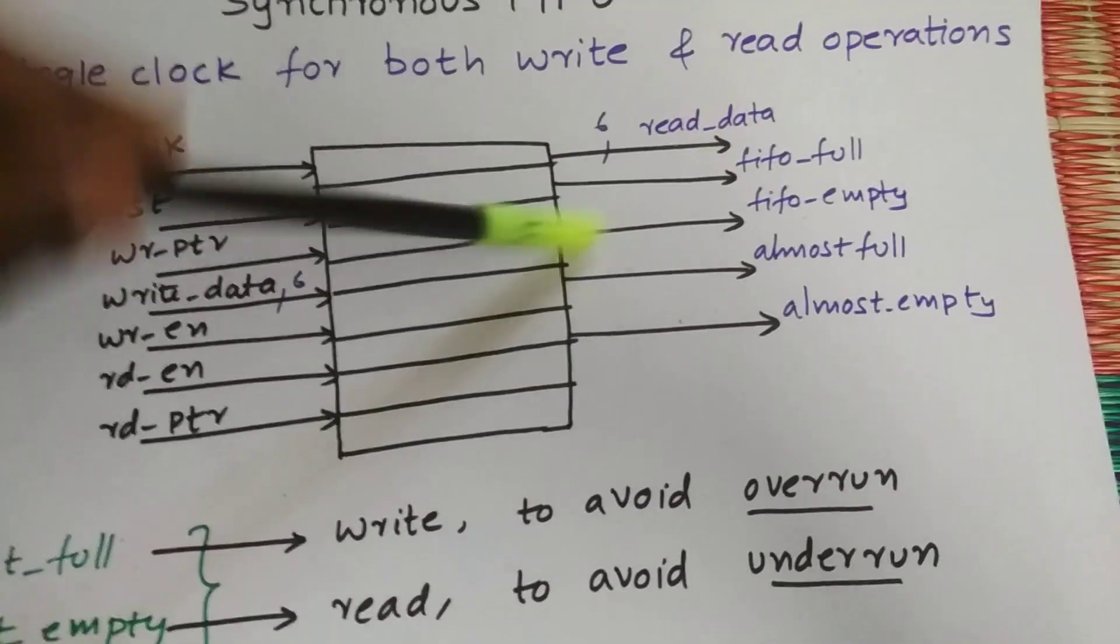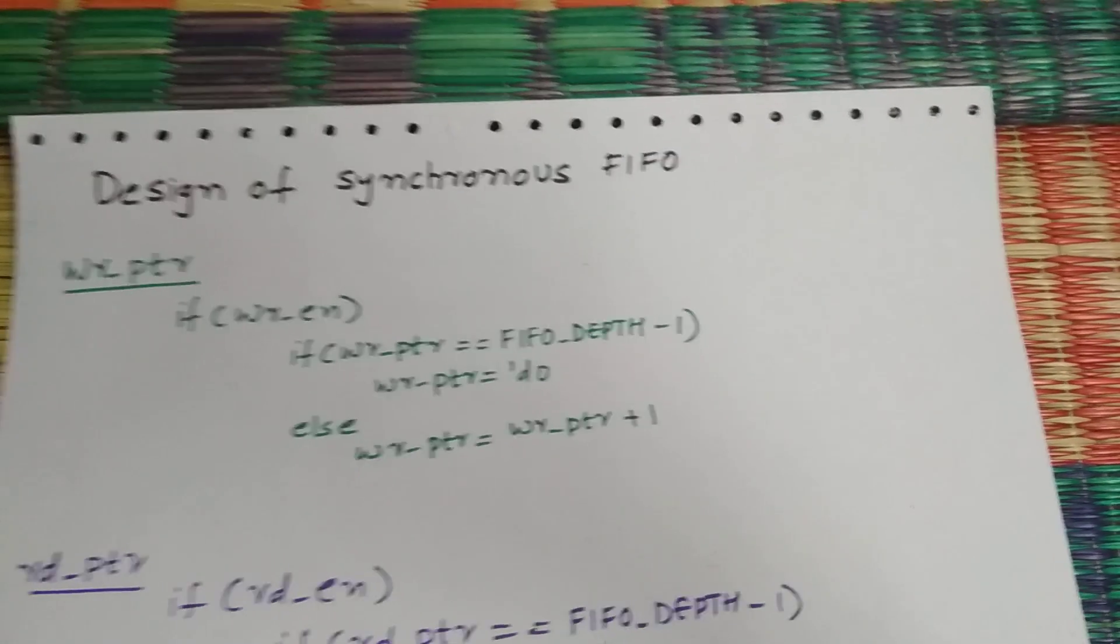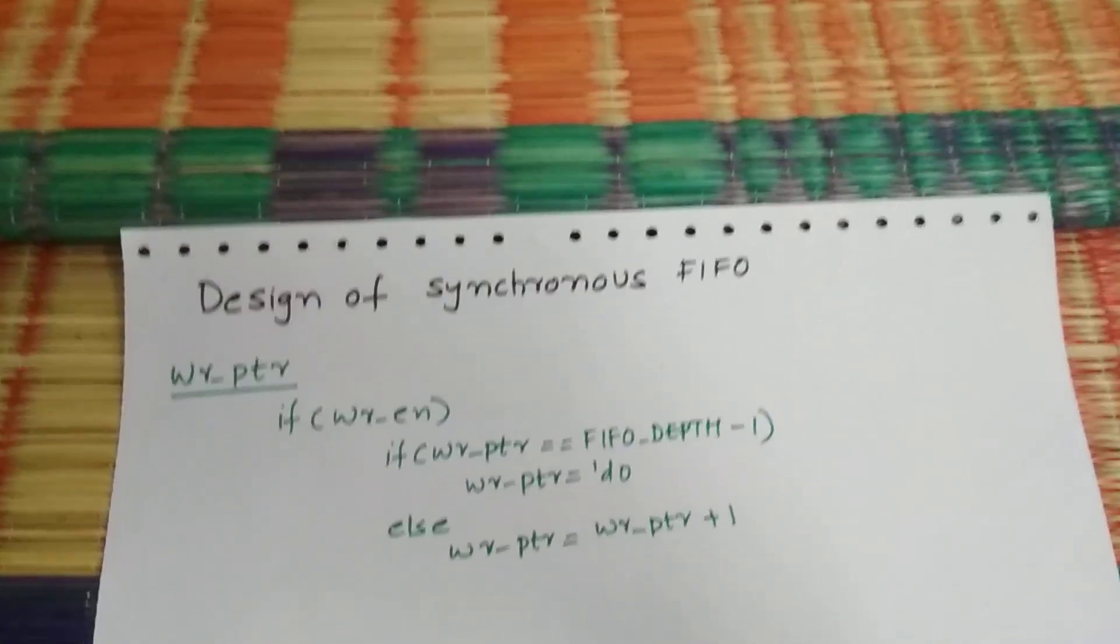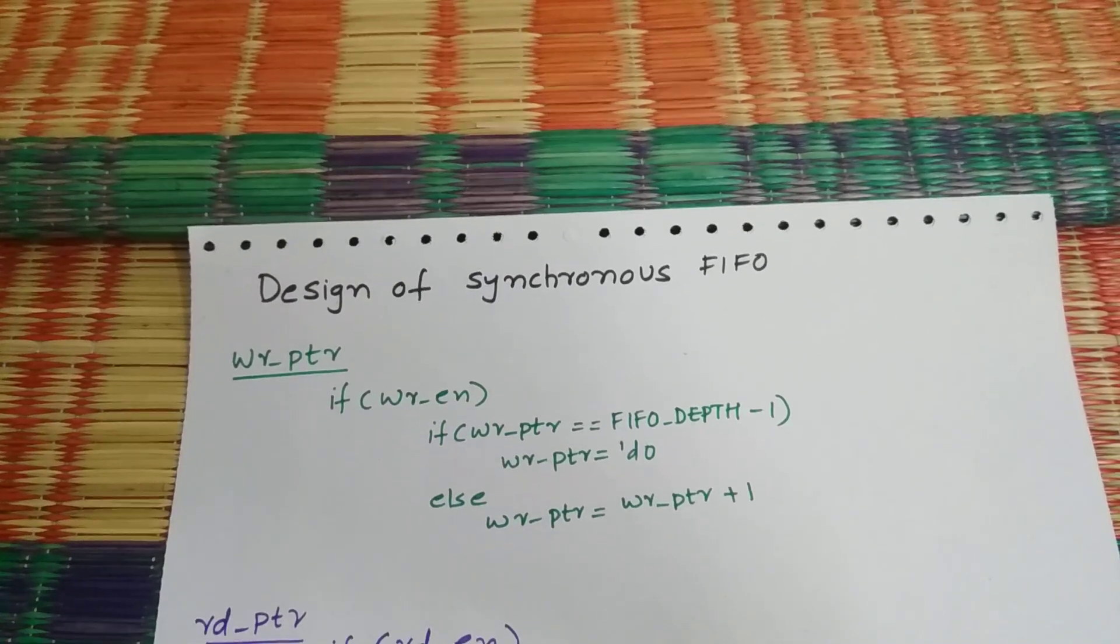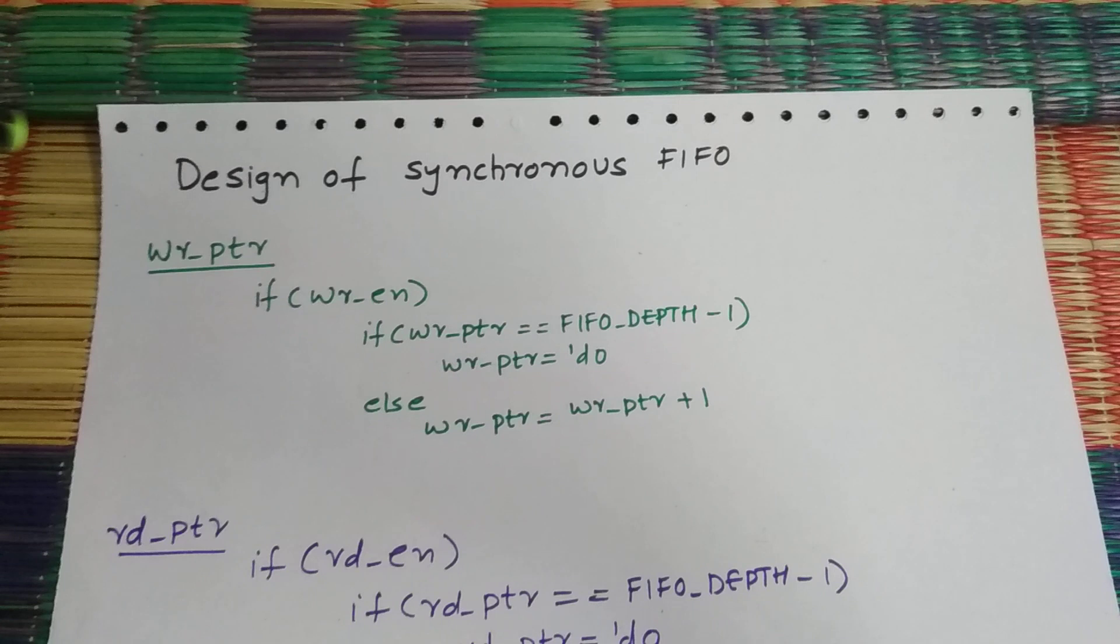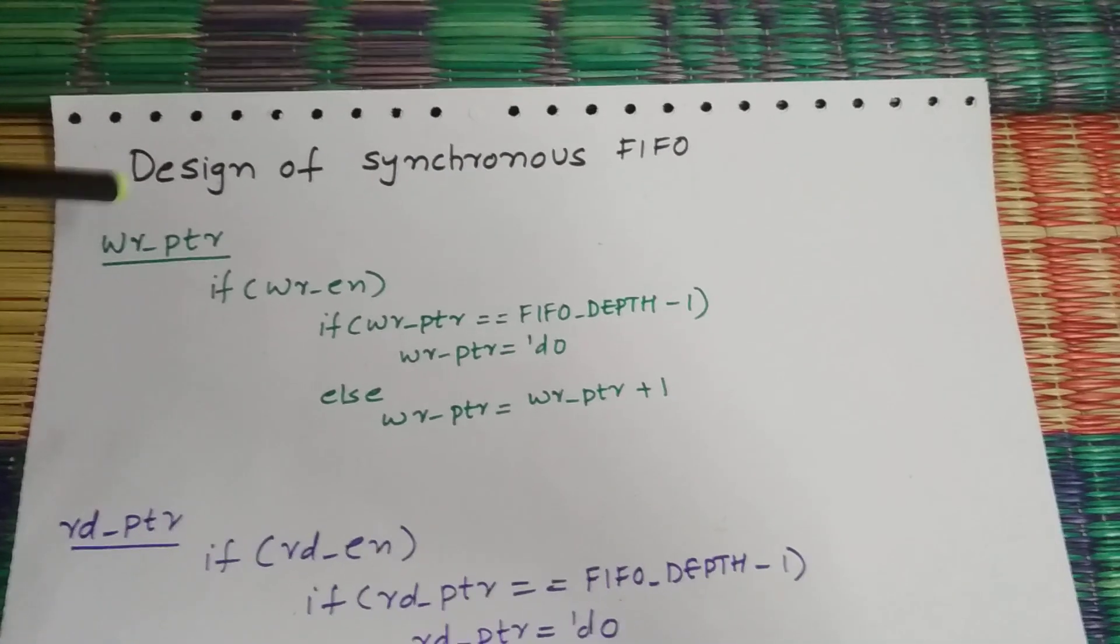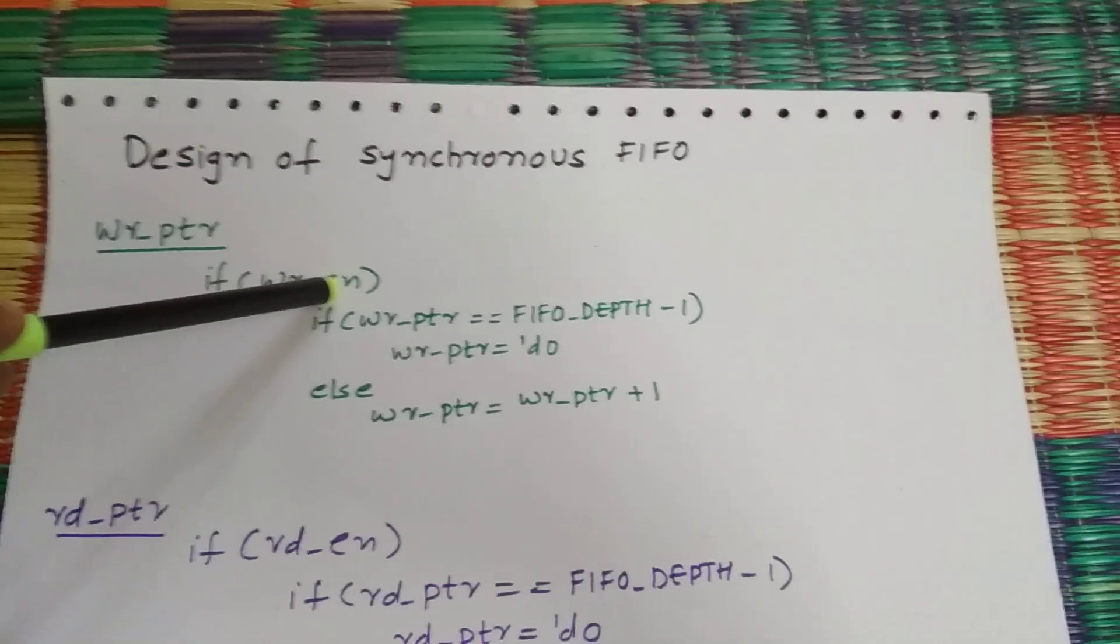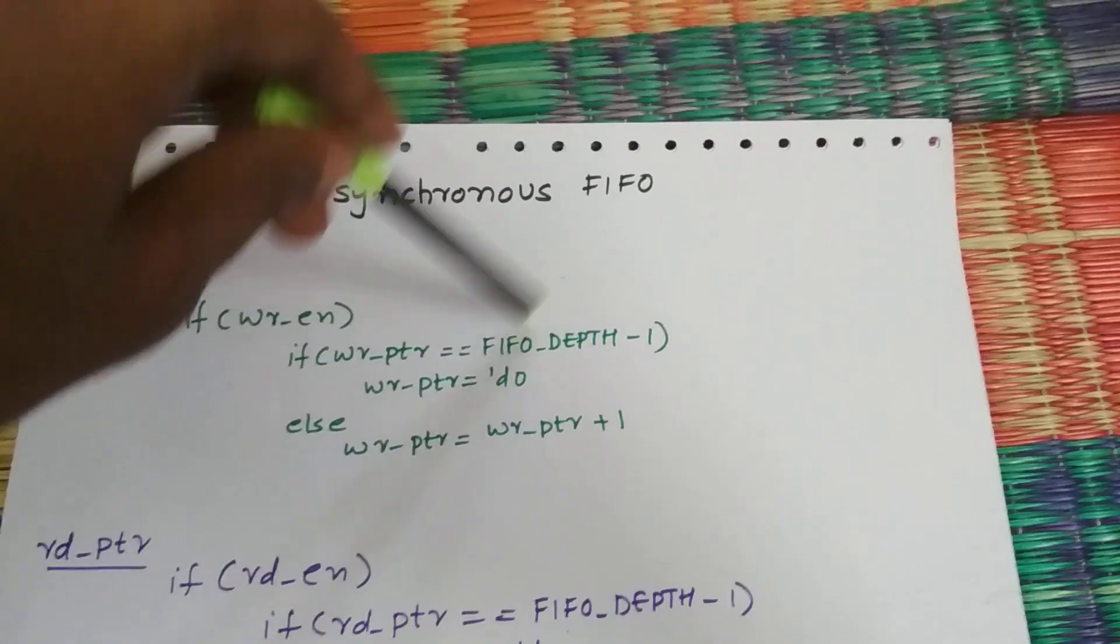Coming to design aspect, I'm going to share you the code. If you want, just mail me and comment below. We have a write pointer and read pointer. Write pointer will increment when write enable is high and write pointer is not pointing to almost full - that's FIFO depth minus one.